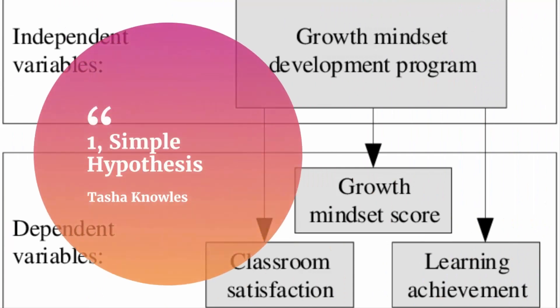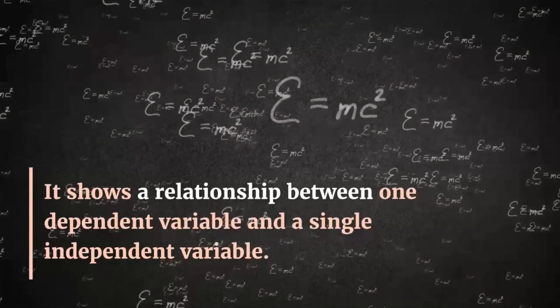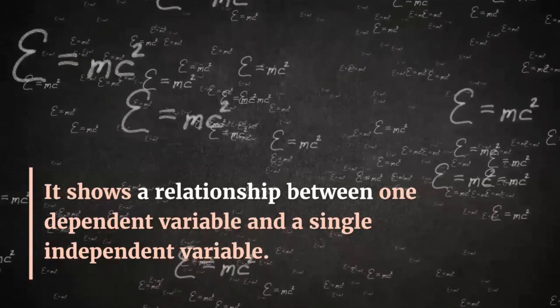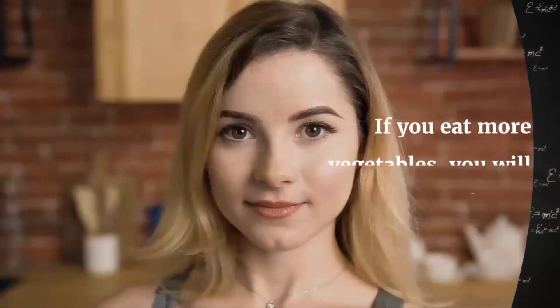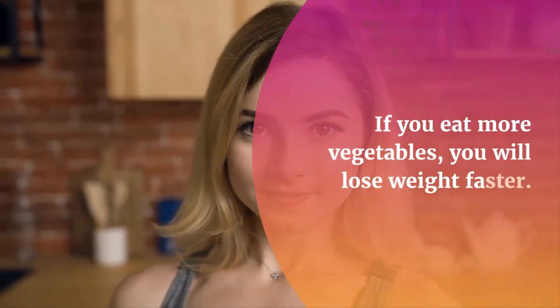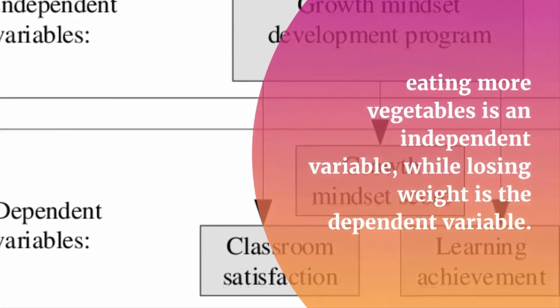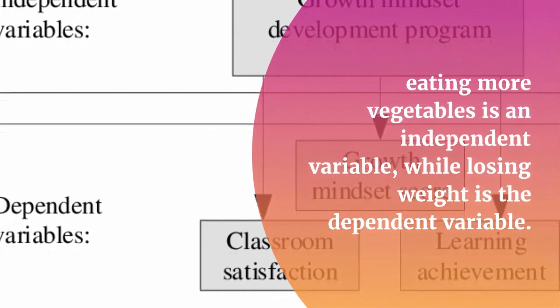1. Simple hypothesis. It shows a relationship between one dependent variable and a single independent variable. For example, if you eat more vegetables, you will lose weight faster. Here, eating more vegetables is an independent variable, while losing weight is the dependent variable.